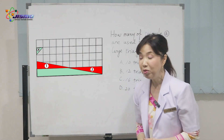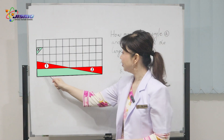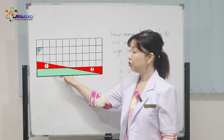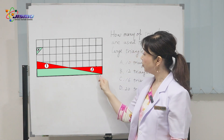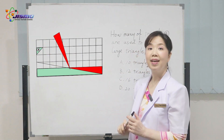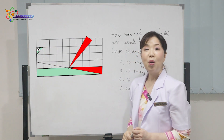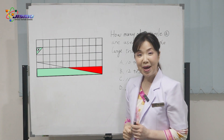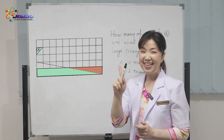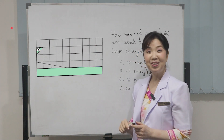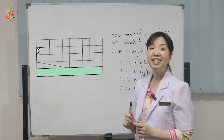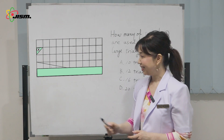Now we move triangle 1 onto triangle 2. What shape appears now? Yes, it is a rectangle made of 10 squares.